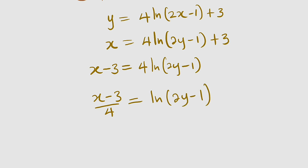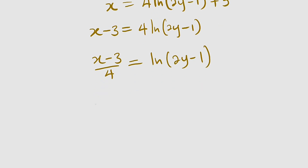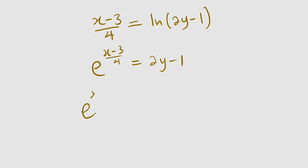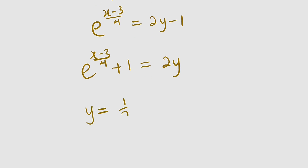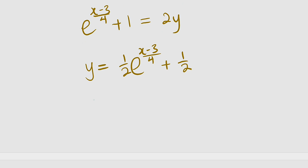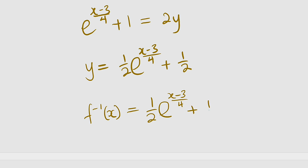Remember that natural log is a logarithm to the base e. Therefore, e to the power of (x minus 3) divided by 4 is equal to 2y minus 1. Let us add 1 to both sides. So e to the (x minus 3) divided by 4, plus 1, is equal to 2y. Finally, we divide both sides by 2. So y will be equal to one half times e to the (x minus 3) divided by 4, plus 1 divided by 2. Now we replace y with f inverse of x. Therefore, f inverse of x is equal to one half times e to the (x minus 3) divided by 4, plus one half.